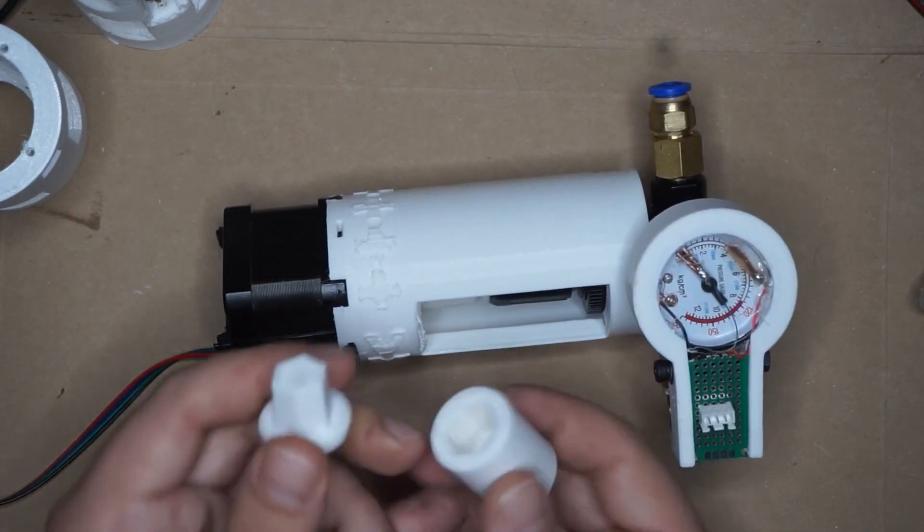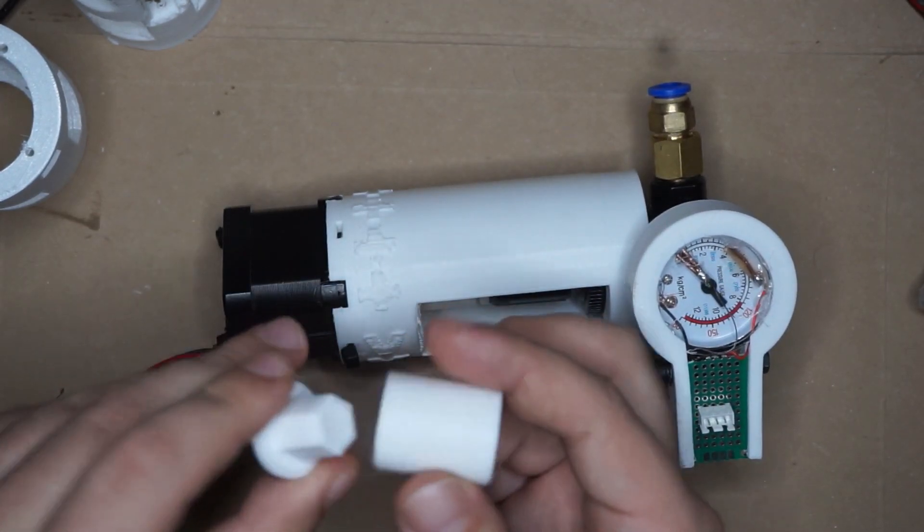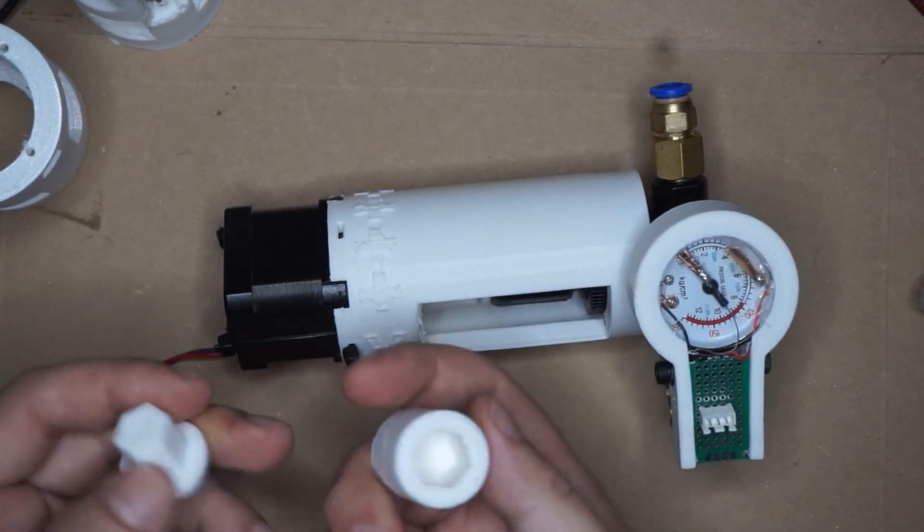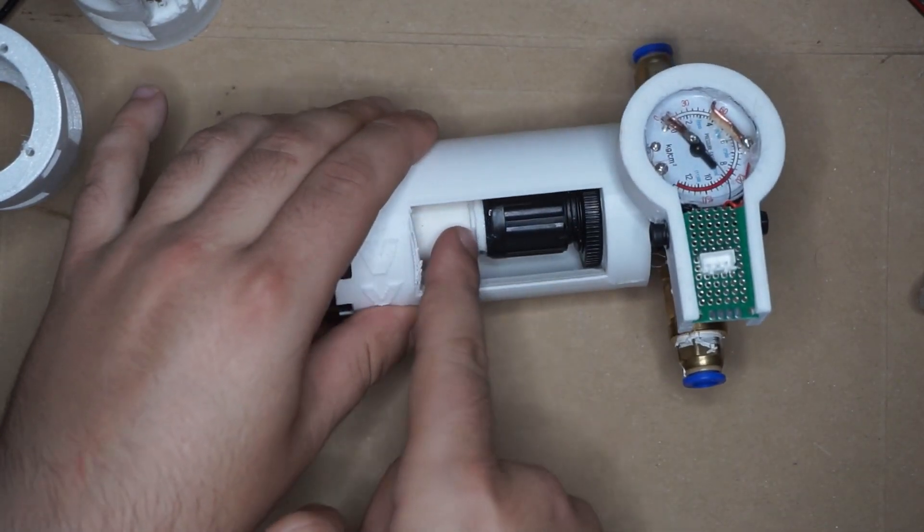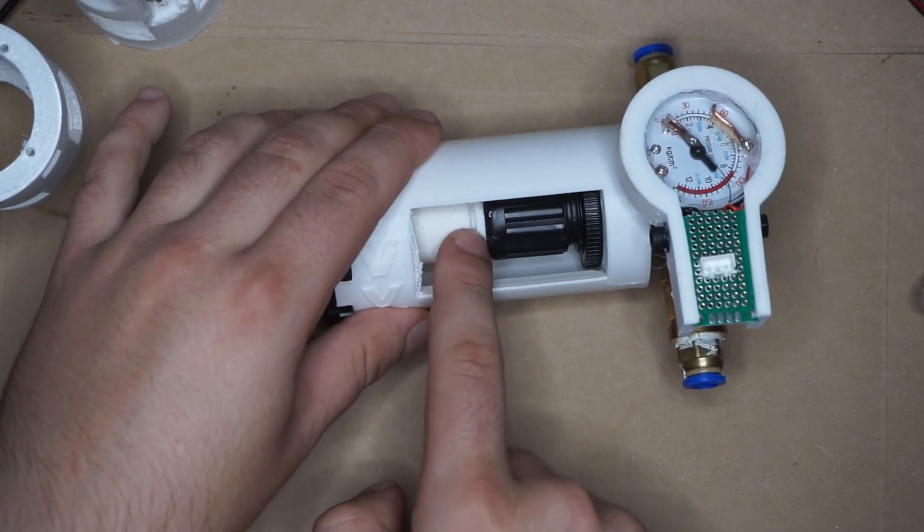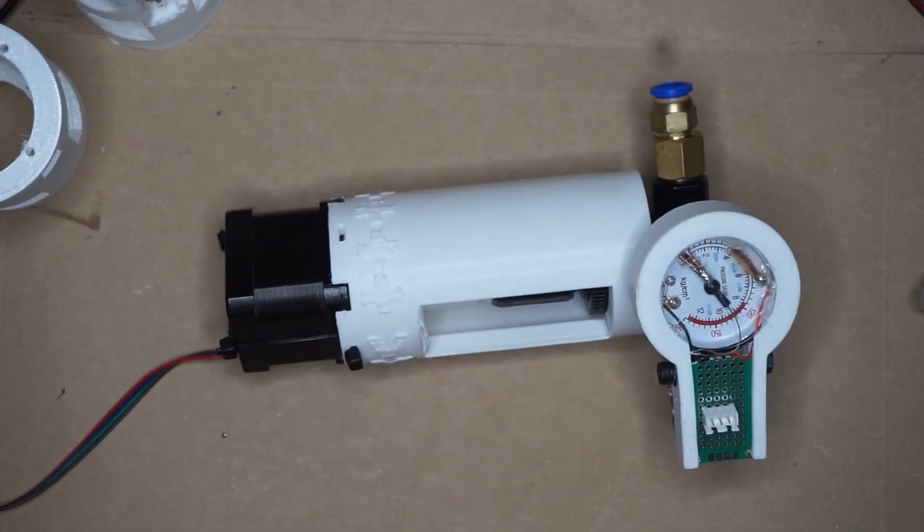So I had to add a sliding connector that looks a little bit like this. It's basically a hexagon that goes into a hexagon tunnel and can slide in and out. You can see it here. There's a little gap and this gap will get smaller and bigger depending on which direction you turn the knob.